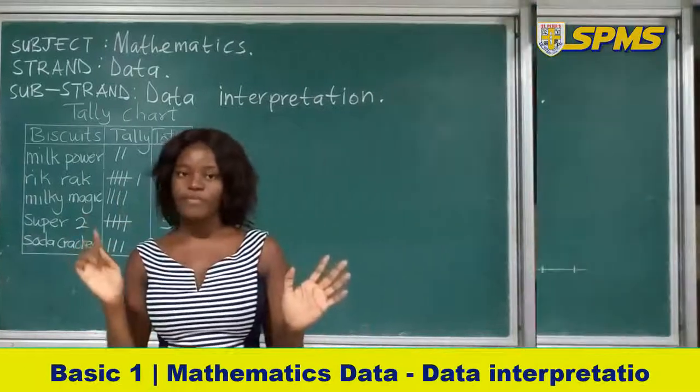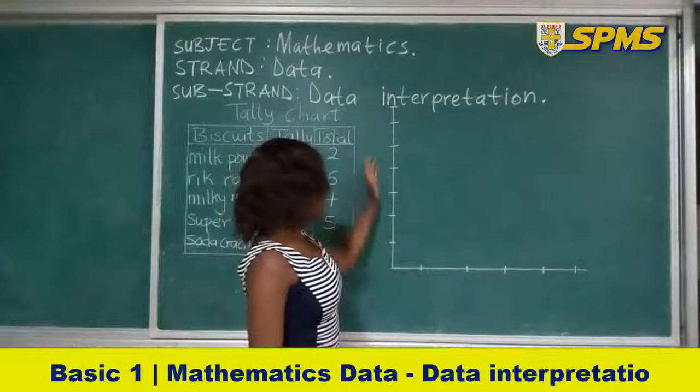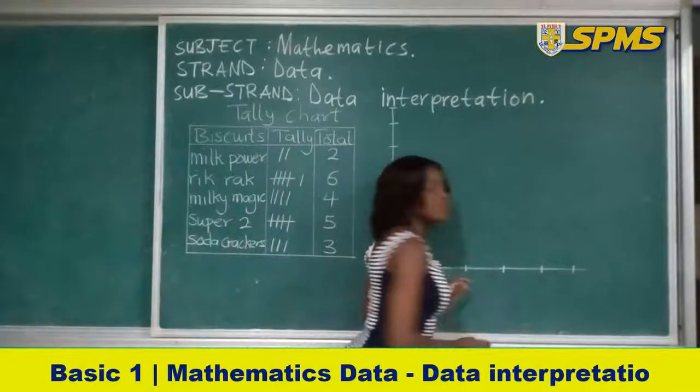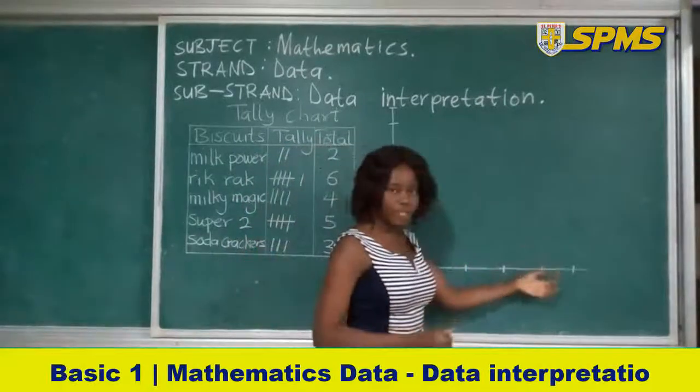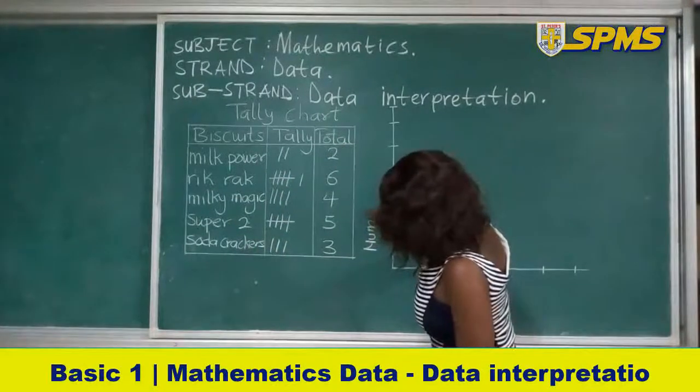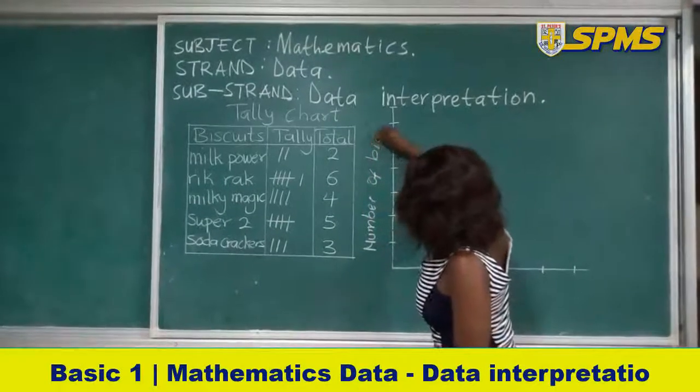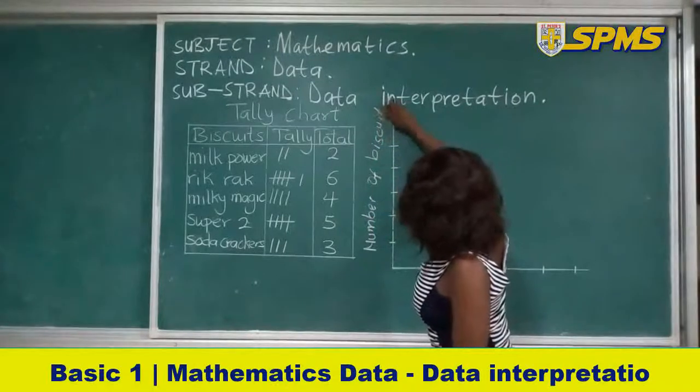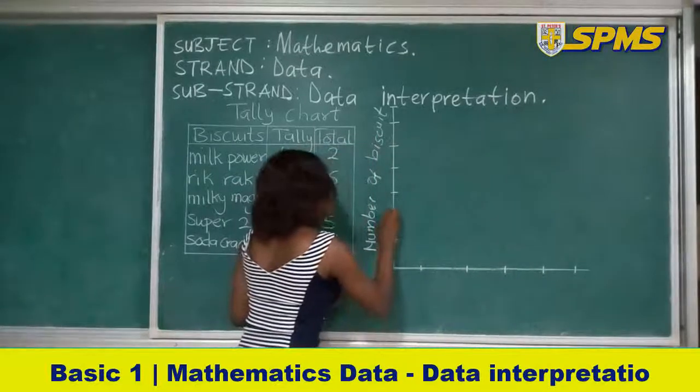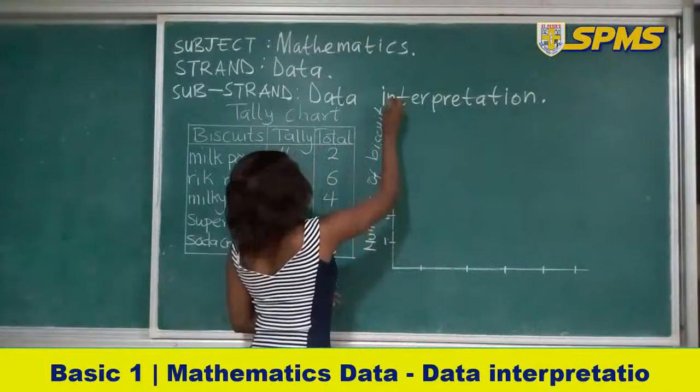Children, look at what we have here. The vertical line is going to represent the number of biscuits and the horizontal is going to represent the size or kind of biscuits. Now let's look at this. So we are writing the number of biscuits. The numbers you start from one, two, three, four, five, six, seven.